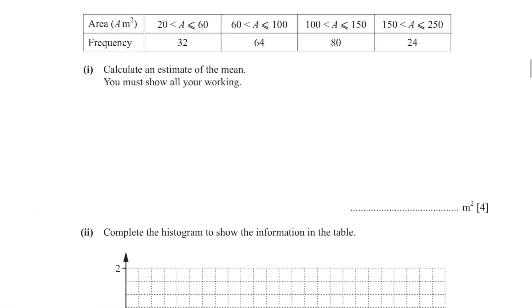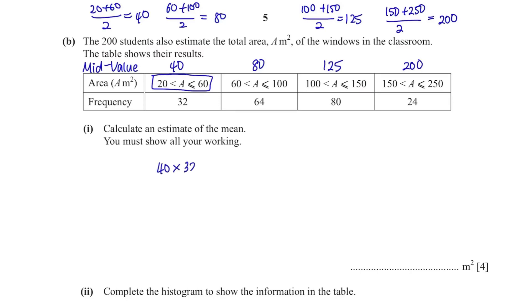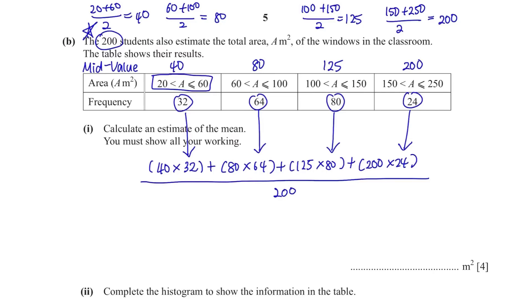Part B. The 200 students also estimate the total area a m2 of the windows in the classroom. The table shows their results. Calculate an estimate of the mean. You must show all your working. First thing that you need to do is to find the mean values of these ranges. For the first one, it's 20 plus 60 divided by 2, so 40. Next, the same thing, 60 plus 100 divided by 2, so 80 and so on. Then to find the mean, multiply each mid value with frequency. Then add all of them together and finally divide them with the total number of frequency, which is in this case 200. Then you should be able to get 106.